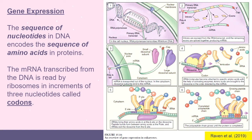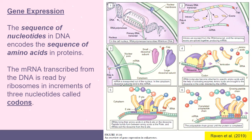The introns are removed and the remaining exons are spliced together to produce mRNA — messenger RNA. The messenger RNA leaves the nucleus and binds to ribosomes, the ribosomal units found in the cytoplasm. Transfer RNA molecules then become attached to specific amino acids with the help of activating enzymes, and the amino acids are brought to the ribosomes in the order directed by the mRNA.